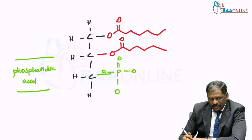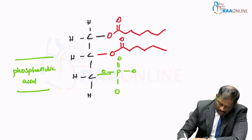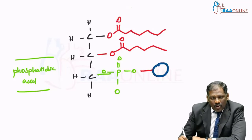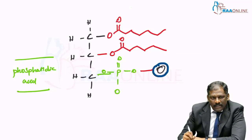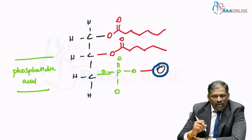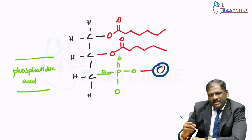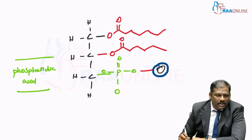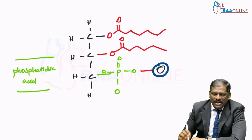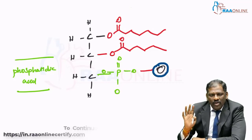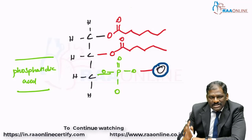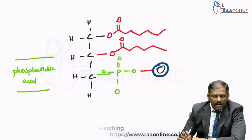Now, to this phosphatidic acid if you attach an additional compound — for example, if this is choline — then you call this phosphatidylcholine. If this additional group is another glycerol, then you call this phosphatidylglycerol. In this way you name various different kinds of glycerophospholipids with respect to the additional group which is getting attached to the phosphate, which is the basic structure of a glycerophospholipid.